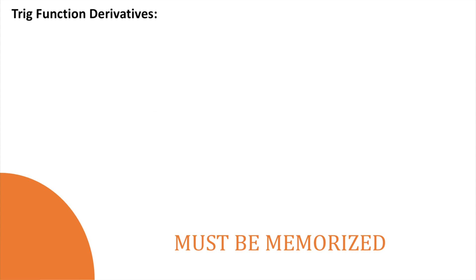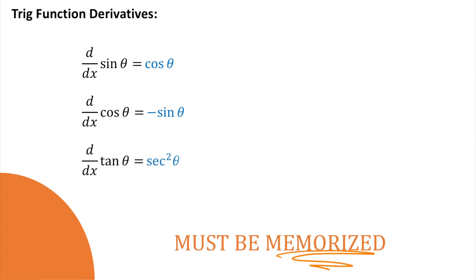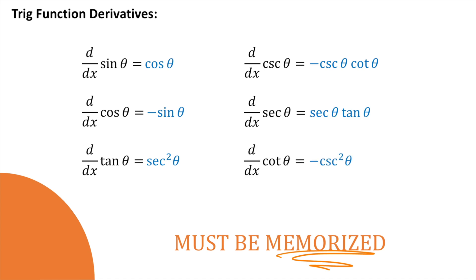All of the trig functions also have derivatives, and it's good to have these memorized — it'll make your problem solving much faster. Derivative of sine is cosine. Derivative of cosine is negative sine. Derivative of tangent is secant squared. Derivative of cosecant is negative cosecant cotangent. Derivative of secant is secant tangent. Derivative of cotangent is negative cosecant squared. There are a lot of patterns here — the negatives happen when the front letter is a C: cosine, cosecant, and cotangent all become negative.